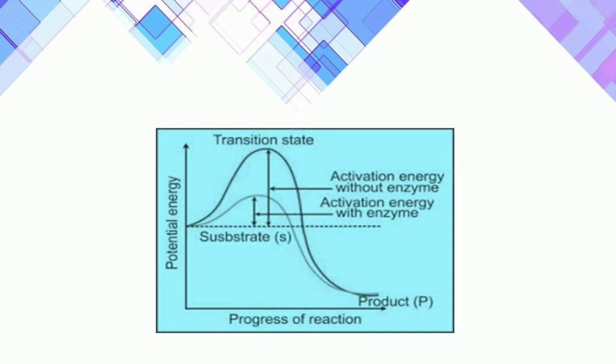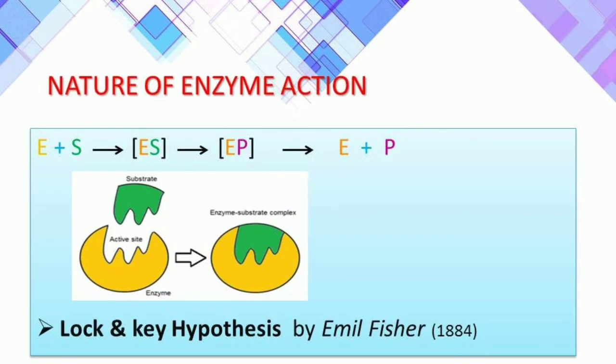In the graph, you will notice the difference in activation energy without an enzyme versus activation energy with an enzyme. The substrate undergoes a transition state and a product is formed both in the presence and absence of an enzyme, but the activation energy is clearly lower with an enzyme, as you can see in the graph.